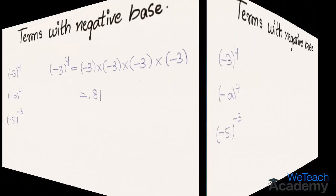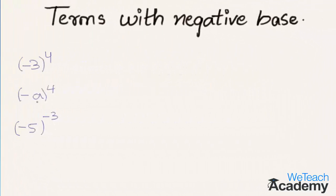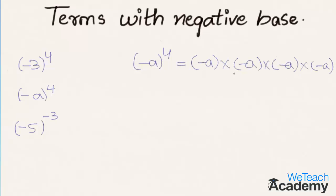The second example is minus a raised to the power 4, which is nothing but minus a multiplied by itself 4 times. As the exponent 4 is even, we get the result a raised to the power 4.